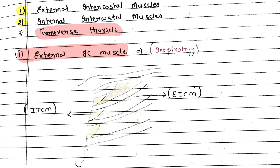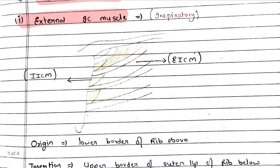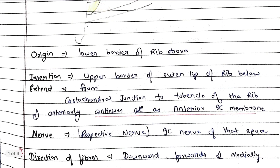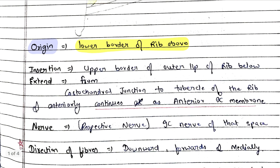External intercostal muscle. This little photo is unclear, I'm sorry for that, please manage. So this part is the internal intercostal muscle, and this side is the external intercostal muscle. Now let's talk about origin: it originates from the lower border of the rib above. Insertion: upper border of the outer lip of the rib below.